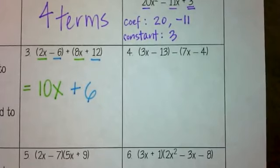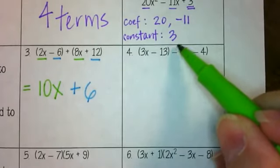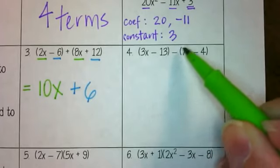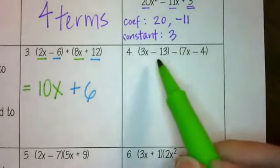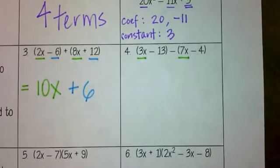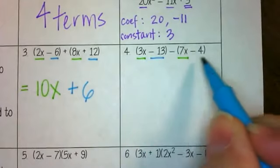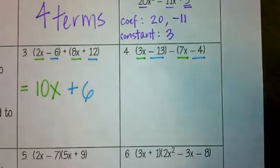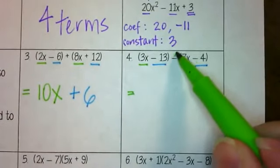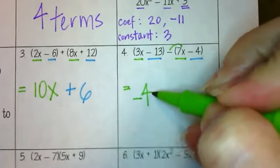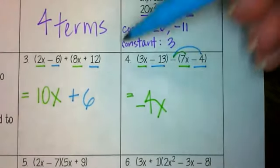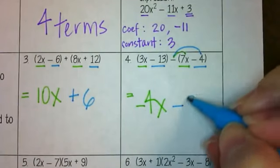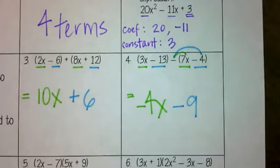Number four: this time we're subtracting these two binomials. What you need to remember on subtracting is that we need to distribute this negative — we don't want to subtract just the 7x, we want to subtract the whole thing: the 7x and the negative 4. The 3x and the 7x are like terms, and the negative 13 and the negative 4 are like terms. So 3x minus 7x is negative 4x, and negative 13 minus negative 4 would be negative 13 plus 4, which is negative 9. Those are not like terms, so we're done.